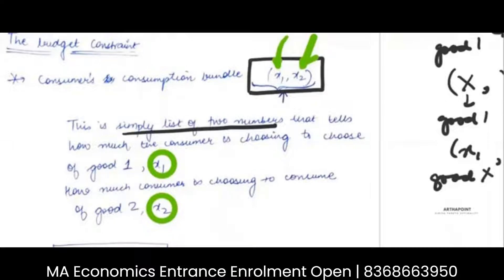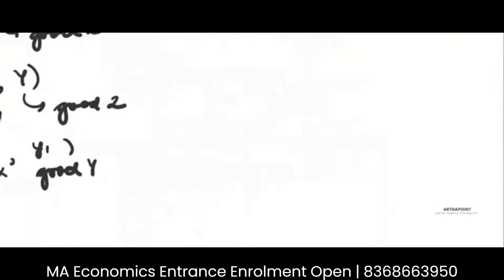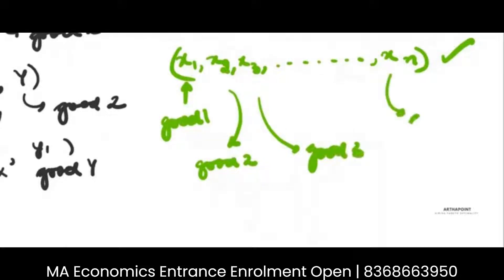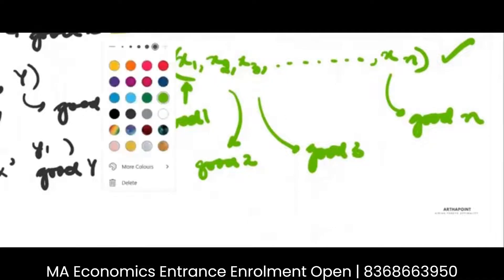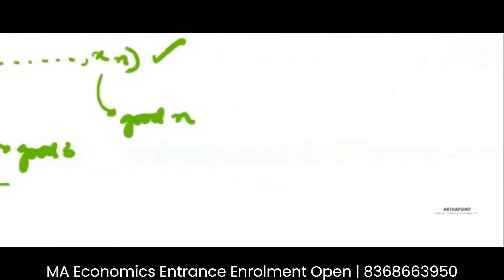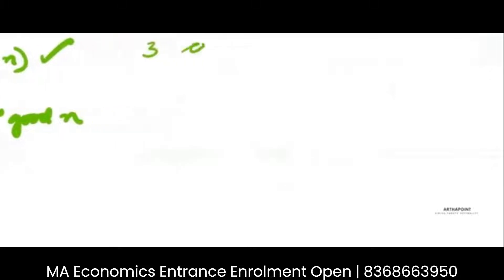It is not wrong to have a consumption bundle with more than two goods. For example, a consumption bundle which looks like x1, x2, x3 all the way till xn is a valid consumption bundle. It tells me the amount consumed for good one, good two, good three, through good n. There is nothing wrong with it, but the plotting may become a little difficult. For example, with a three-good consumption bundle, the plotting becomes more complex.